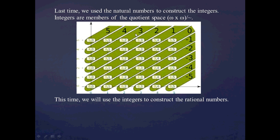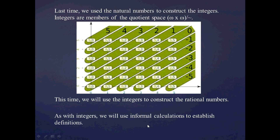So what we're going to do this time is very much in the same line of thinking. We're going to consider a Cartesian product, set up an equivalence relation to partition that Cartesian product, and continue on to use these sorts of informal calculations — essentially our intuitions about these numbers — to establish our definitions.